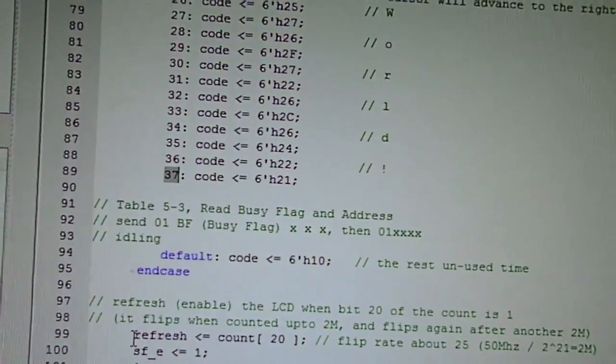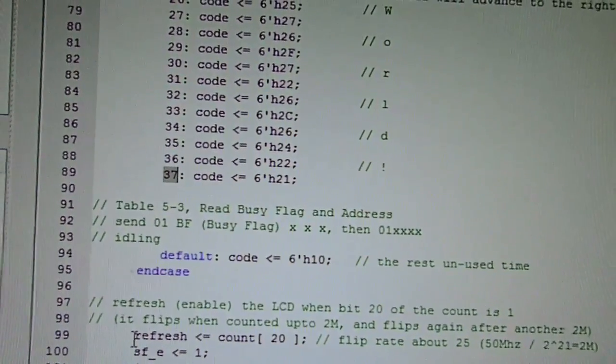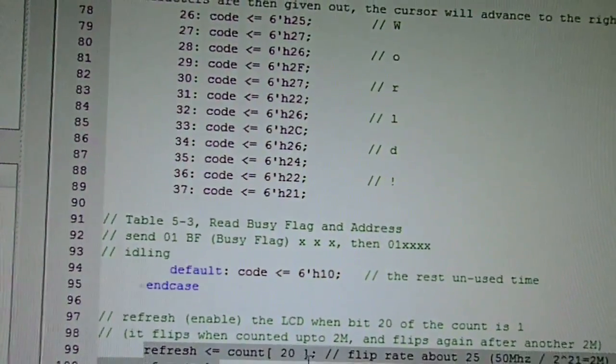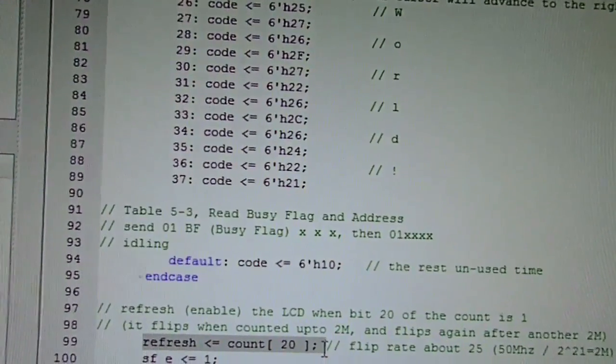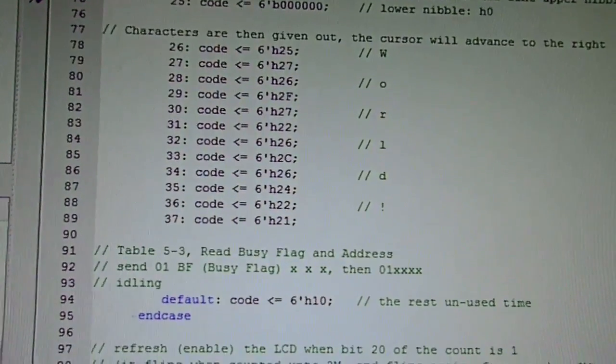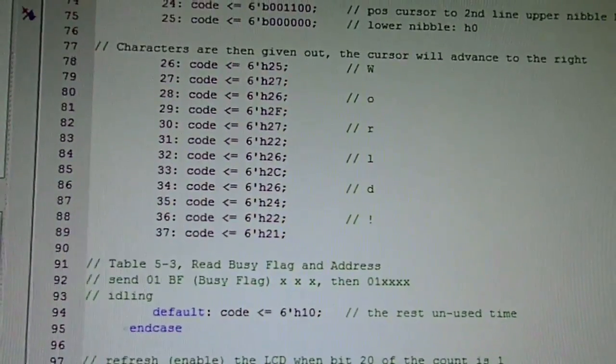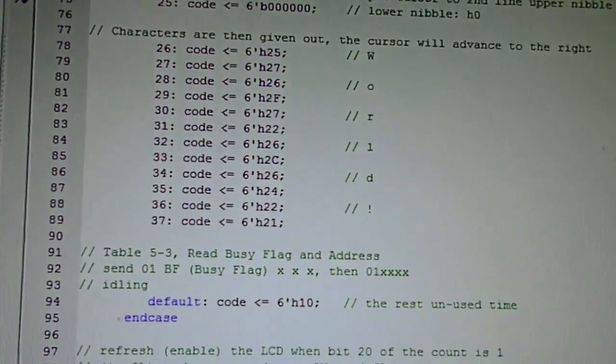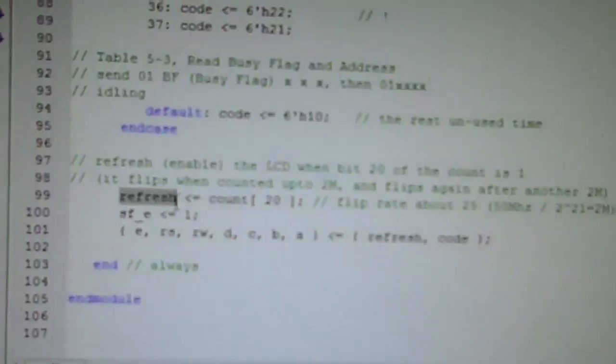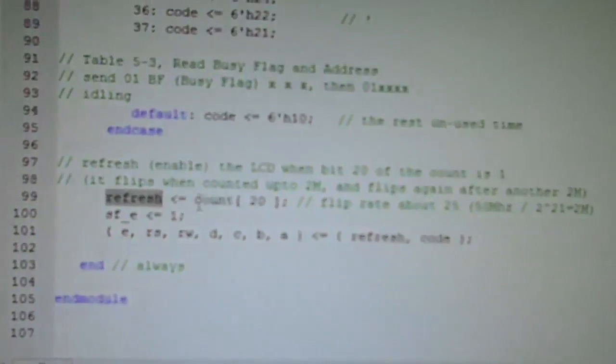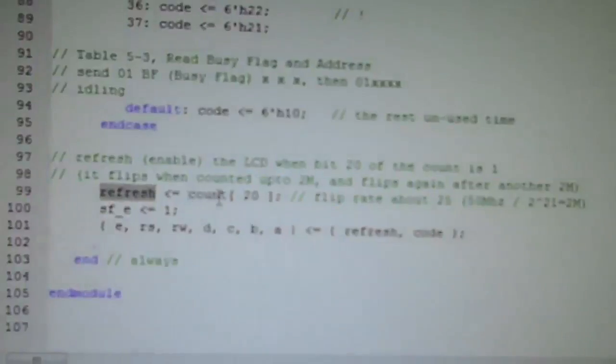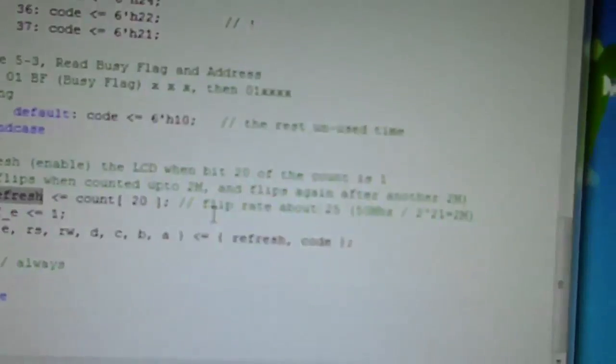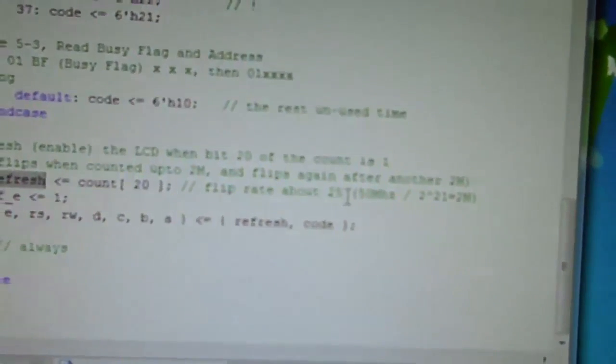We do this not all the time upon the rising edge of the master clock—that would be too fast. What we want to do is have a period where we're going to give the code to the LCD module, and then a period to not give it to the LCD module. The flip-flop refresh is set true when bit 20 of the 27-bit count is set to one. This bit is flipping at the rate of about 20 times a second.